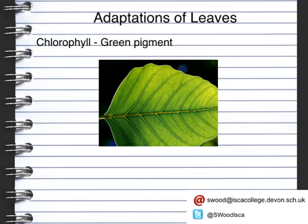The chlorophyll will absorb light from various different parts of the spectrum, and we'll have a look at that in just a moment. The next thing you'll notice is that the leaf has a large surface area. The large surface area is to allow a broad amount of light to hit the actual leaf and be able to drive photosynthesis.